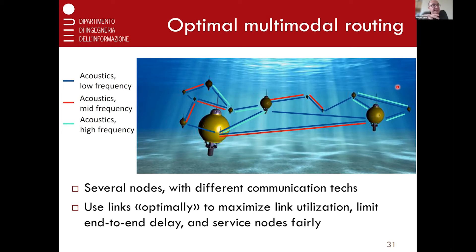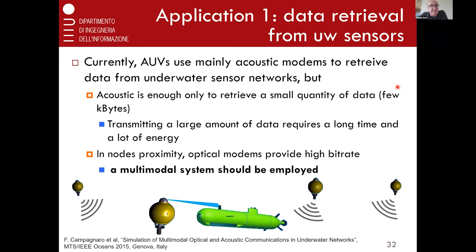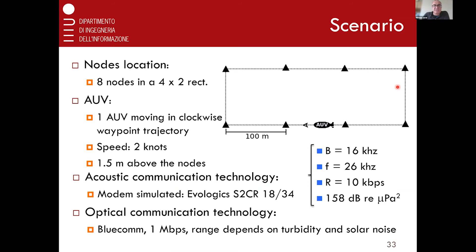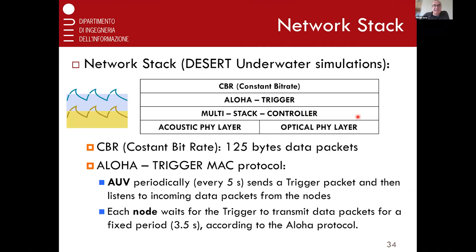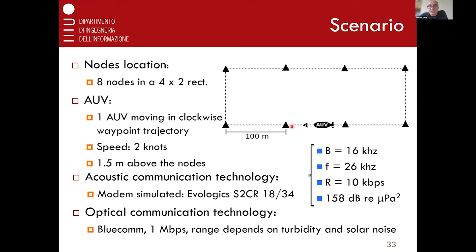You may set up optimization problems differently with many constraints and many degrees of freedom. Just to give you an idea — let's say you have an AUV going around a trajectory passing by eight nodes, going clockwise at a certain speed, and it has two transducers. We want to use the one which is most adequate in any given situation. To study this, we use the simulation framework called Desert Underwater, which is based on NS2 and has fairly complete protocol stacks.